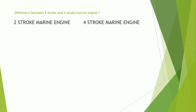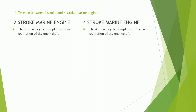The first difference: in the 2 stroke marine engine, the cycle completes in one revolution of the crankshaft — that is, scavenging, compression, fuel injection, expansion, and exhaust processes are completed in one revolution of the crankshaft and the cycle is repeated again. Whereas in 4 stroke engines, the cycle is completed in 2 revolutions of the crankshaft — aspiration, compression, fuel injection, expansion, and exhaust processes are completed in 2 revolutions and the cycle is repeated again.